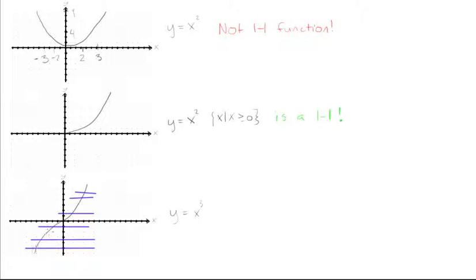So here you can see all of these horizontal lines are obviously only touching once. So this is, again, let's write this down. This one is also a one-to-one function.